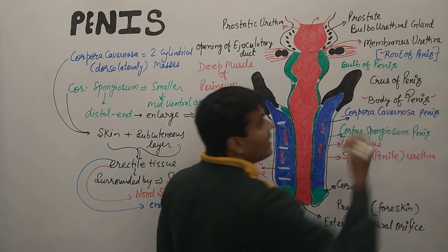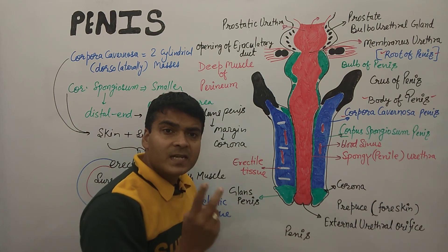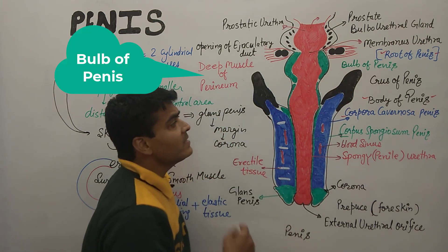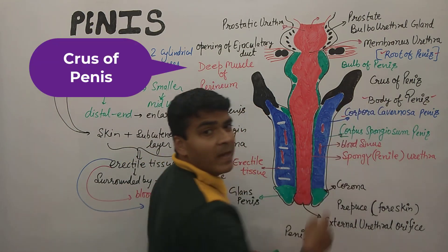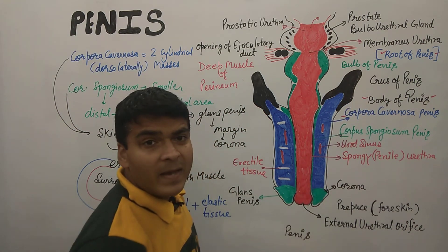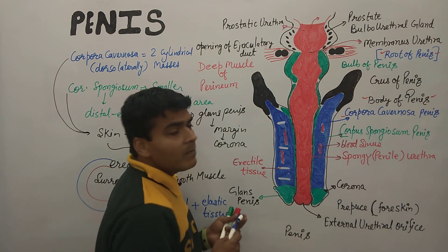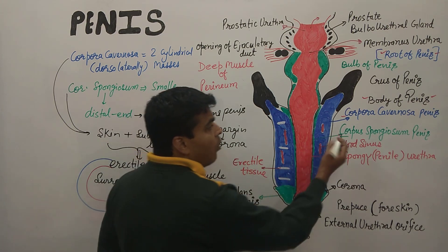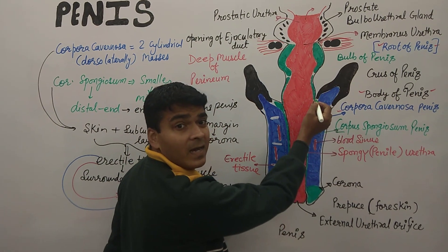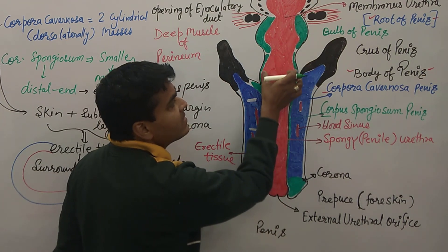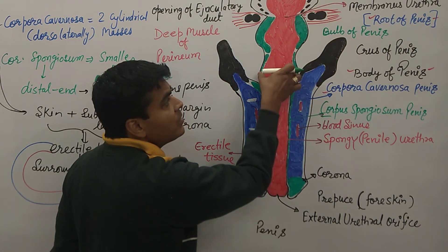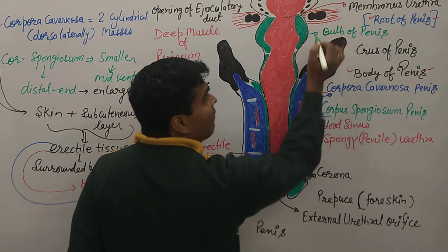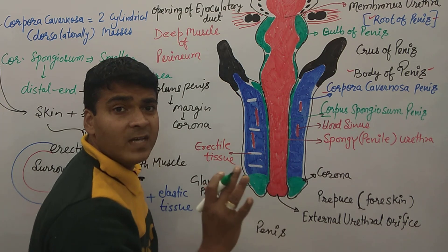Now let us discuss the root of the penis. The root of the penis has two structures: the first one is the bulb of the penis, and the second one is the crus of the penis. The bulb of the penis is formed at the posterior side of the corpus spongiosum.